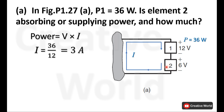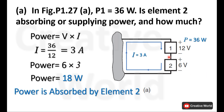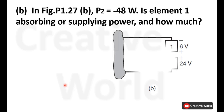Current entering is 3 amperes. The power of element 2 will be voltage 6 multiplied by current 3 amperes, giving a power of 18 watts. Now we judge whether power is being absorbed or supplied by element 2. In our case, element 2 is absorbing power because its power magnitude is positive.